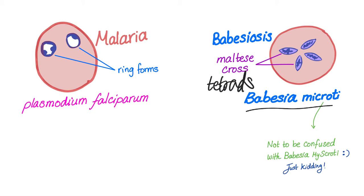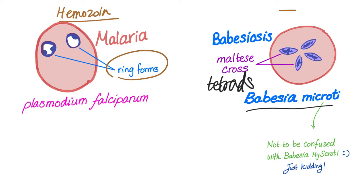In malaria, there is a substance called hemozoin, which is a brownish deposit — this is absent in babesia. Also, malaria has gametocytes; there are no gametocytes in babesia. Instead, we have the Maltese cross. So in short: malaria — ring form; babesia — Maltese cross.